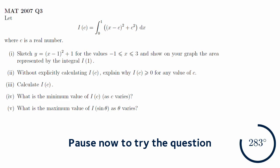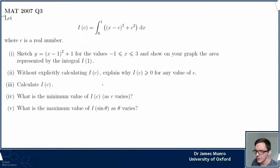Okay, what did this say? Sketch y equals (x minus 1) squared plus 1 for the values x between minus 1 and 3, and show in your graph the area represented by capital I. Quick check, what does capital I of 1 mean? Capital I of 1 means, well everywhere I see a c, I should replace the c with 1, that would be the integral from 0 to 1 of (x minus 1) squared plus 1 dx. Aha, so this is the function, this is the curve here that I'm being asked to sketch.